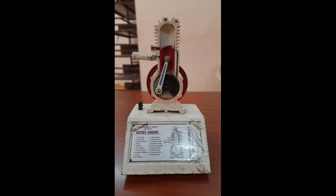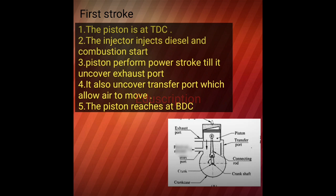In a two-stroke engine, four processes complete in one revolution. In the first stroke, the piston is at top dead center and moves from TDC to BDC. At TDC, the piston is at the highest point of compression, so it will be ignited by itself when the injector injects a fine spray of diesel. Due to ignition, combustion occurs, and pressure is exerted on the piston head, pushing it downward. The piston performs the power stroke until it uncovers the exhaust port, and the burnt gases come out through the exhaust port due to the difference in pressure.